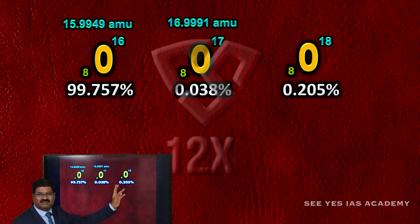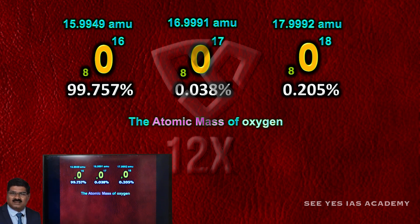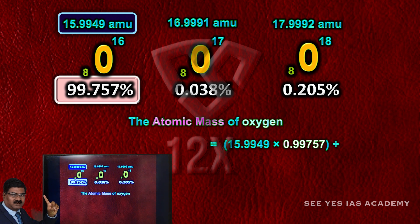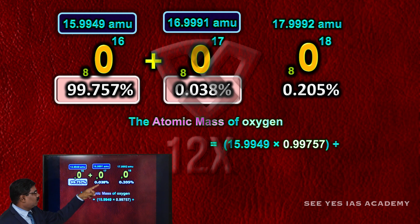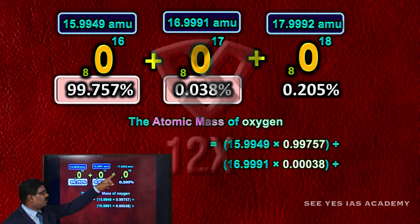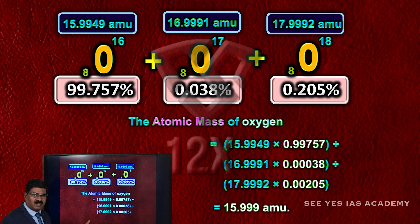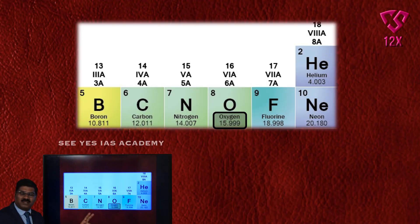The percentage of abundance and mass are given; for example, mass 17.9992 amu. Therefore, the atomic mass of oxygen is calculated as: mass × percentage abundance of first isotope + mass × percentage abundance of second isotope + mass × percentage abundance of third isotope, giving 15.999 amu — which matches the periodic table value for oxygen.